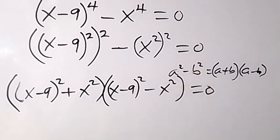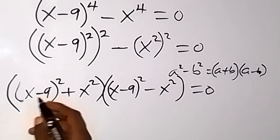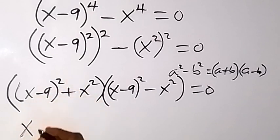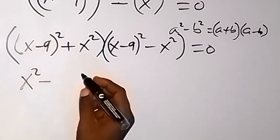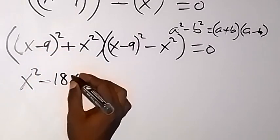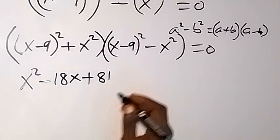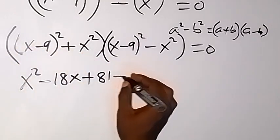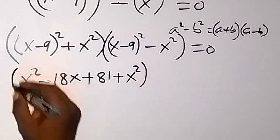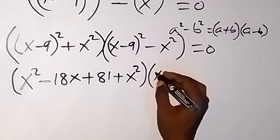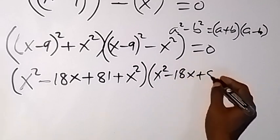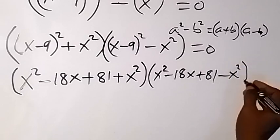What is inside the bracket is what stands as our a and our b, then multiplied by a minus b — that's (x minus 9) squared minus x squared — which equals 0. Now we expand what is inside the brackets. For the first one, (x minus 9) squared expands to x squared minus 18x plus 81. So we have that plus x squared here. On the other side we also have x squared minus 18x plus 81 minus x squared equals 0.